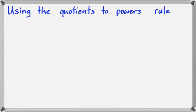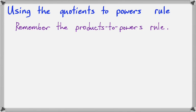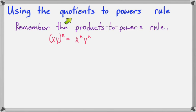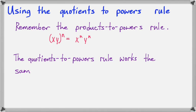In this lesson we'll talk about how to use the quotients to powers rule. We looked earlier at the products to powers rule and found out that if you have a product in parentheses, each factor in the product gets raised to the outside exponent. Well, a quotient is simply a fraction, so the quotients to powers rule works the same way. If you have an outside exponent, each factor inside the parentheses gets raised to that power.